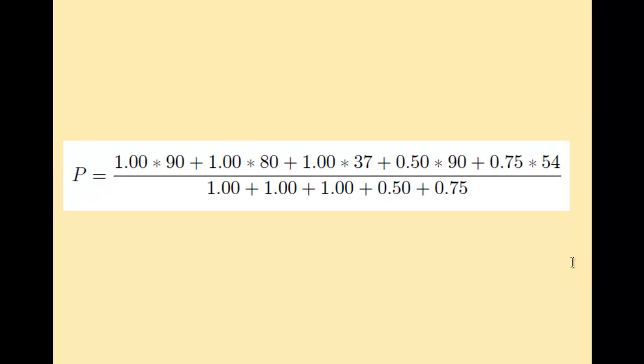Here we have a more complex average familiar to every student. We have three exams. The grades were 90, 80, 37, each with weight one. Homework, grade of 90, but worth half as much as an exam. And labs, grade 54, worth three quarters as much as an exam. So we compute the averages indicated, and what's that denominator? Well, the denominator is there because if the student got a 100 on everything, then it should turn out the average grade was 100. And the denominator makes that statement true.